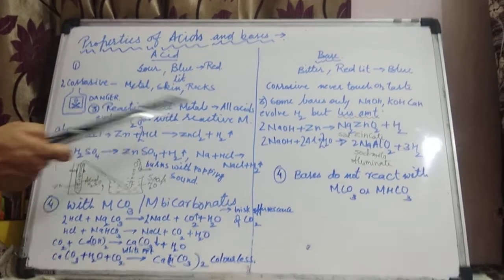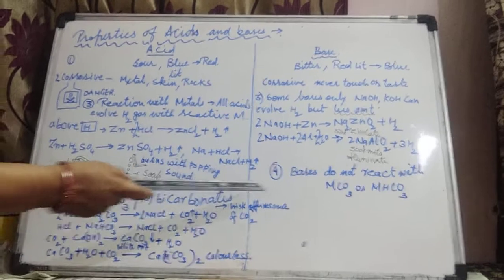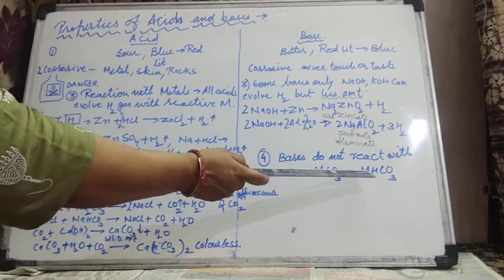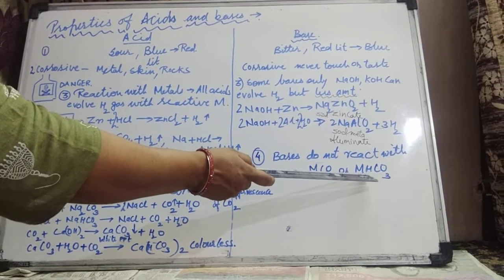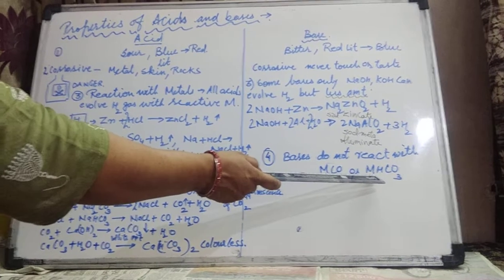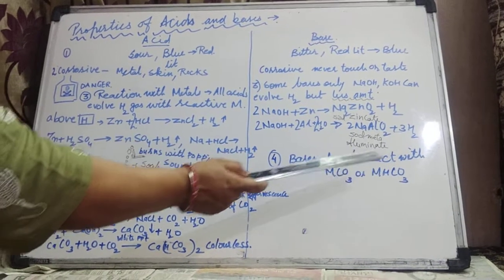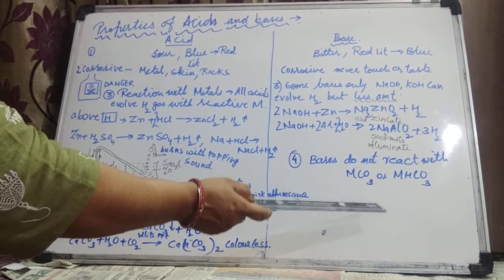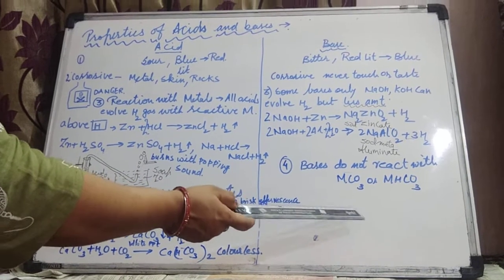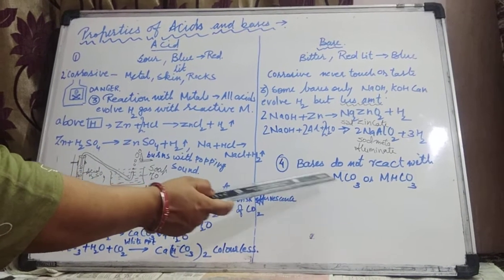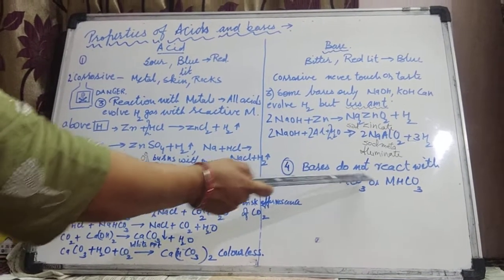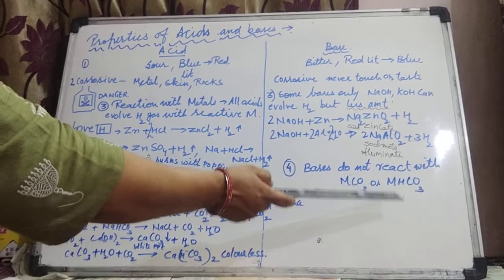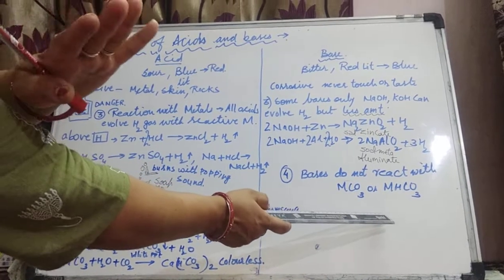Now coming to the base. When bases react with metal carbonate or metal bicarbonate, no reaction takes place. Because metal carbonates or bicarbonates are already slightly basic in nature, bases do not react with metal carbonate or metal bicarbonate.